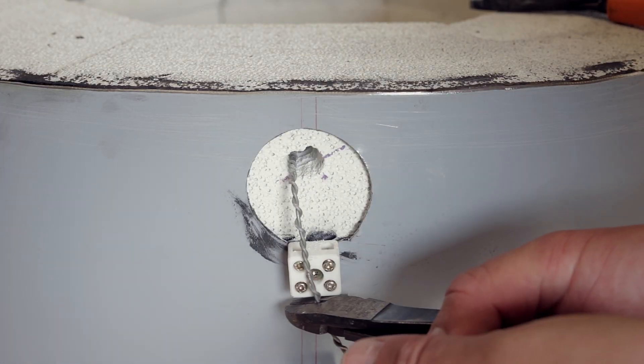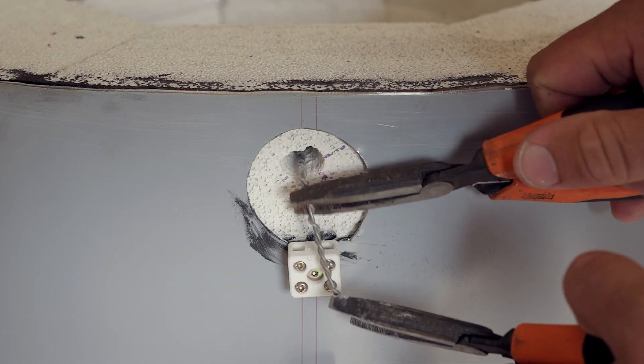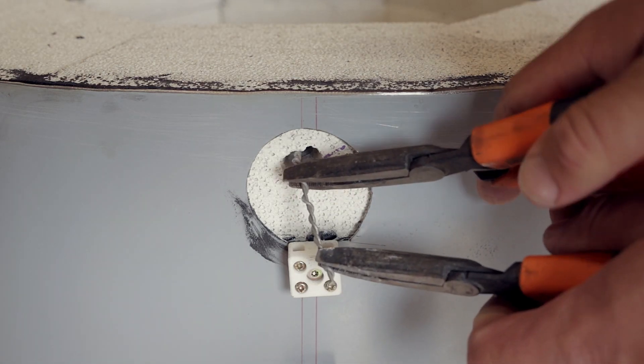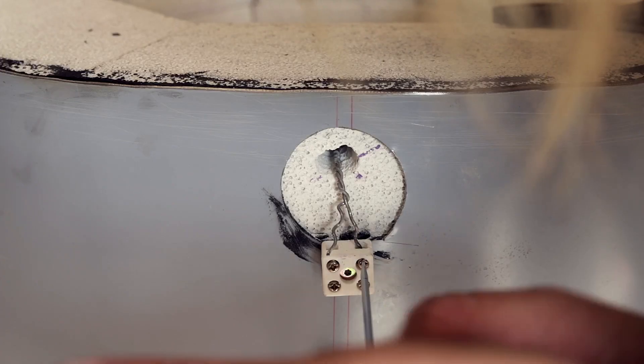The ends can now be cut to length and inserted into the ceramic terminal blocks. I have to untwist the ends, as the terminal block is a bit undersized to allow the thicker twisted end to be inserted in one of the connectors.